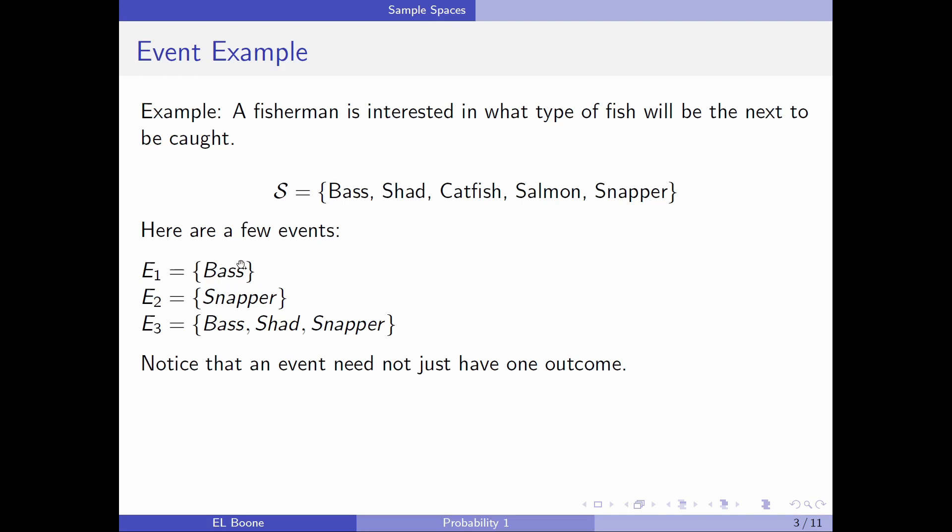Here are a few possible events. E1 could be he caught a bass. E2 could be he caught a snapper. E3, he could be he caught a bass, or he caught a shad, or he caught a snapper. Notice that an event need not have just one outcome. And that's sort of the reason we want to have an event that has more than one outcome, because if they have more than one outcome, then we can use them in interesting ways.